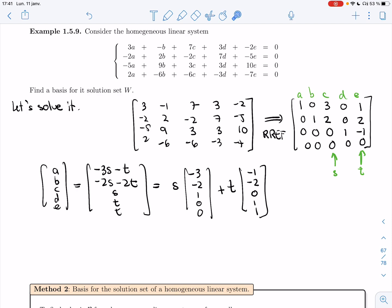All right, so whenever you solve a system like this, you'll get everything written as a linear combination. And so I claim that the basis for W is this set of two vectors: minus 3, minus 2, 1, 0, 0, and minus 1, minus 2, 0, 1, 1.